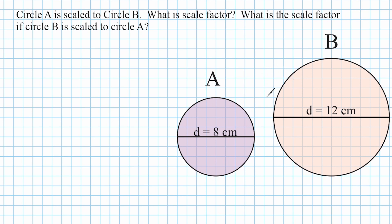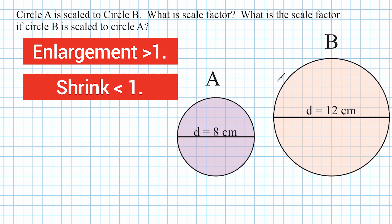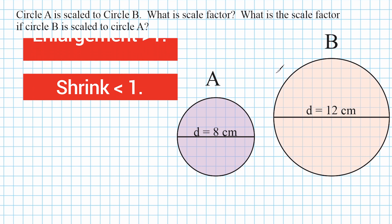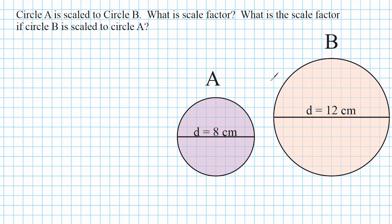Now remember, if you are dealing with the same two shapes, and you have to determine the scale factor, when you enlarge something, the scale factor is going to be greater than 1. And when you shrink something down, it is going to be less than 1. And if you know the scale factor in one direction, we can take the reciprocal of that scale factor. And that is the scale factor in the other direction. So let's start by going from A to B.